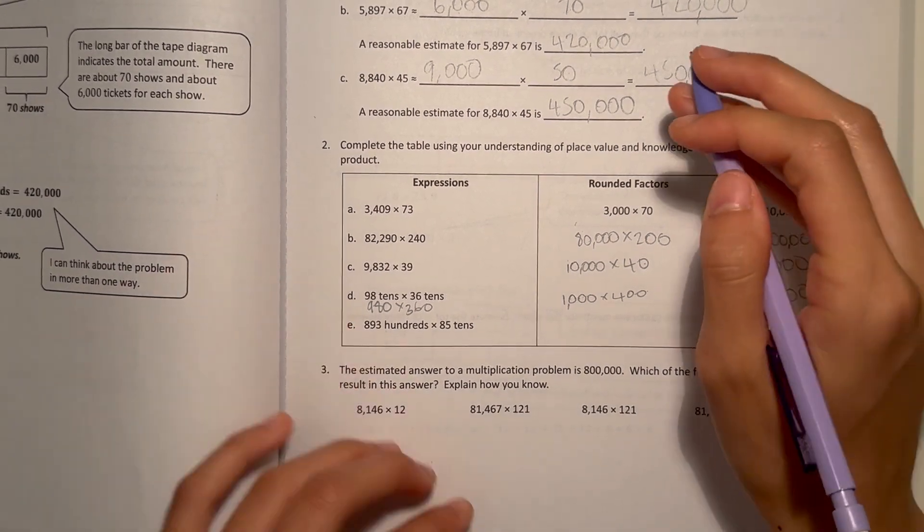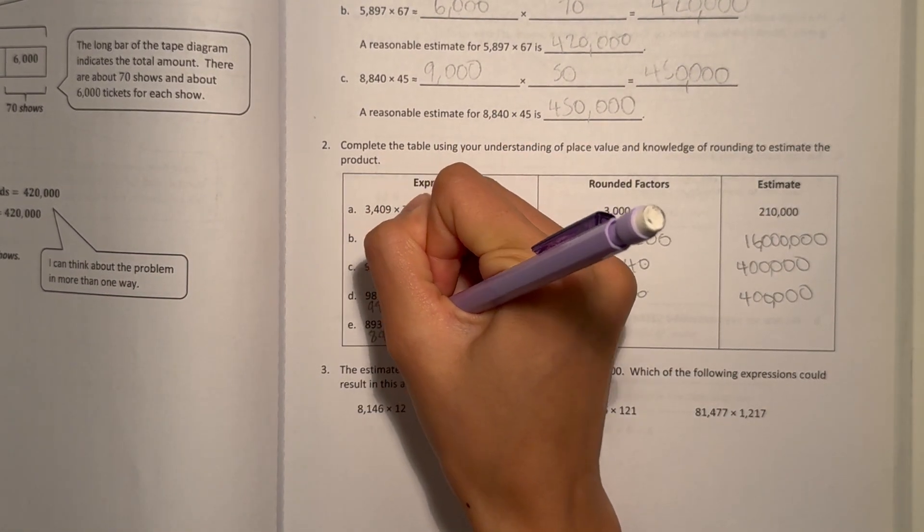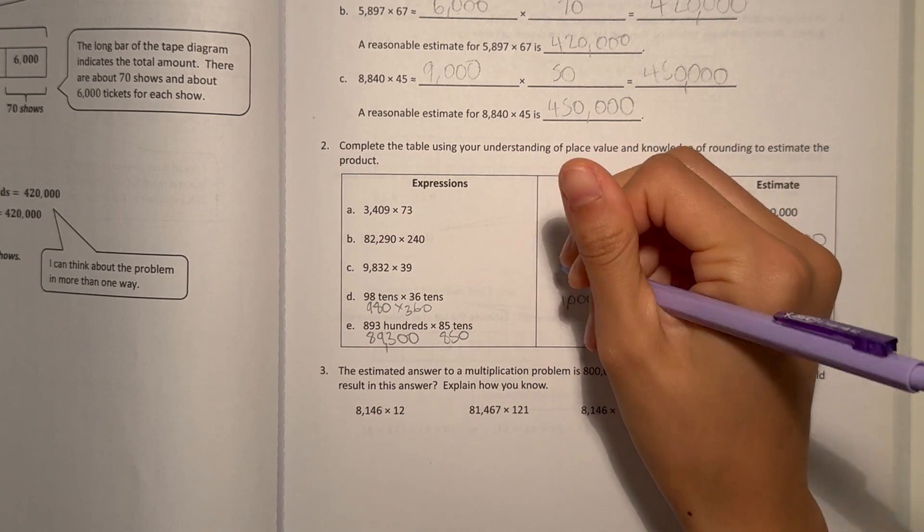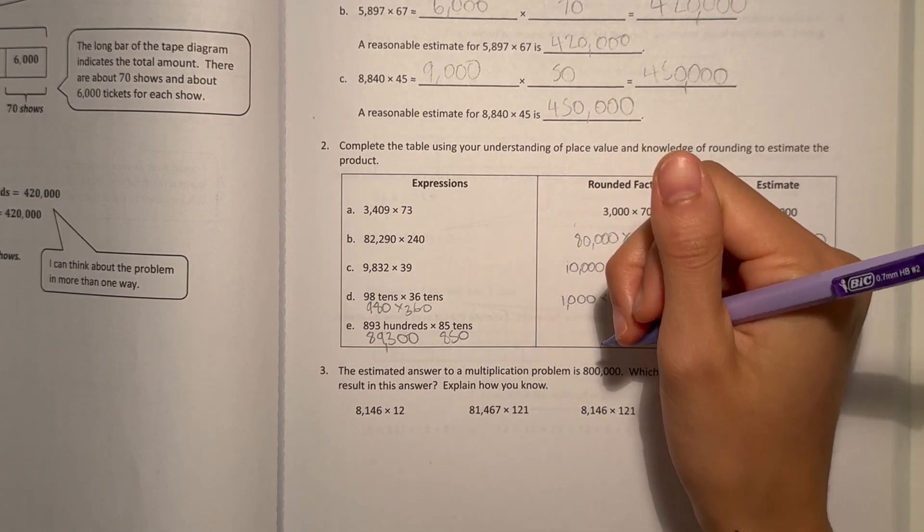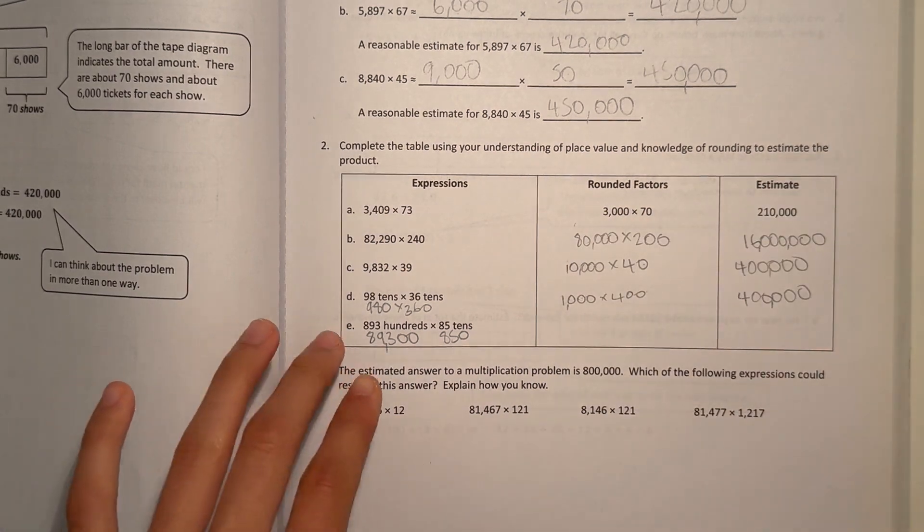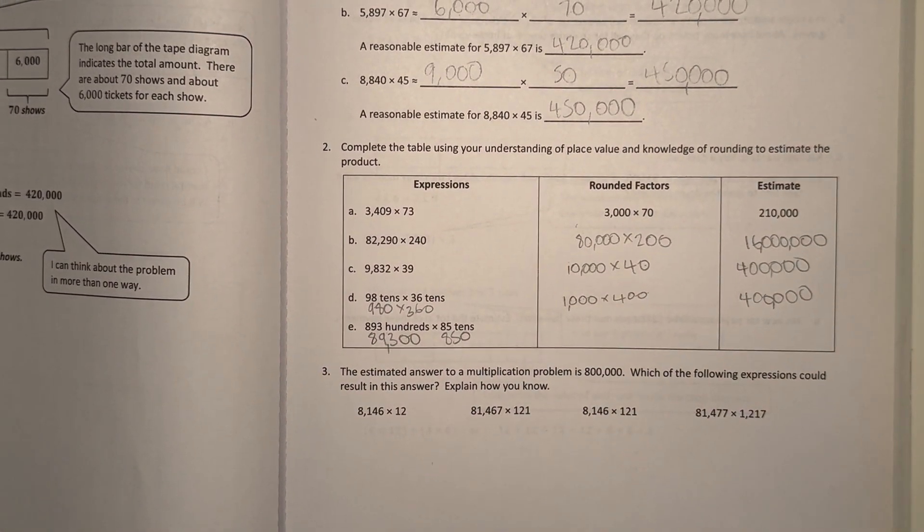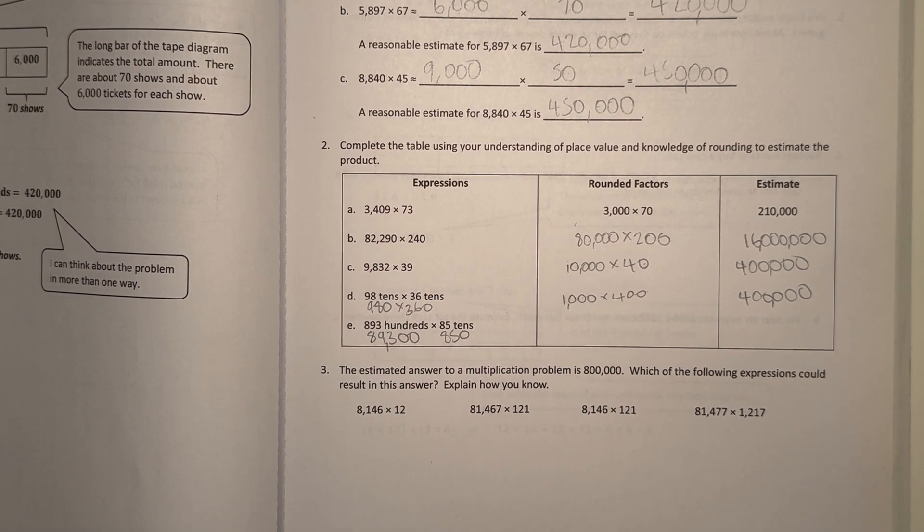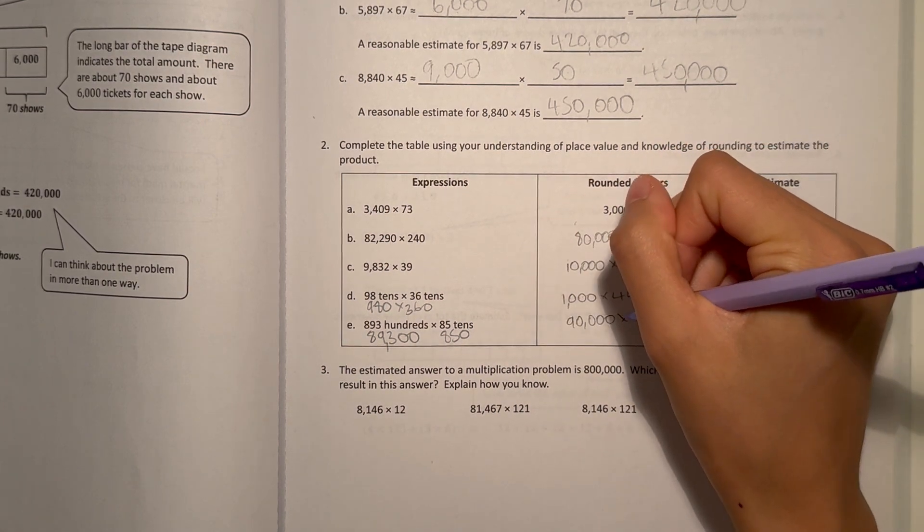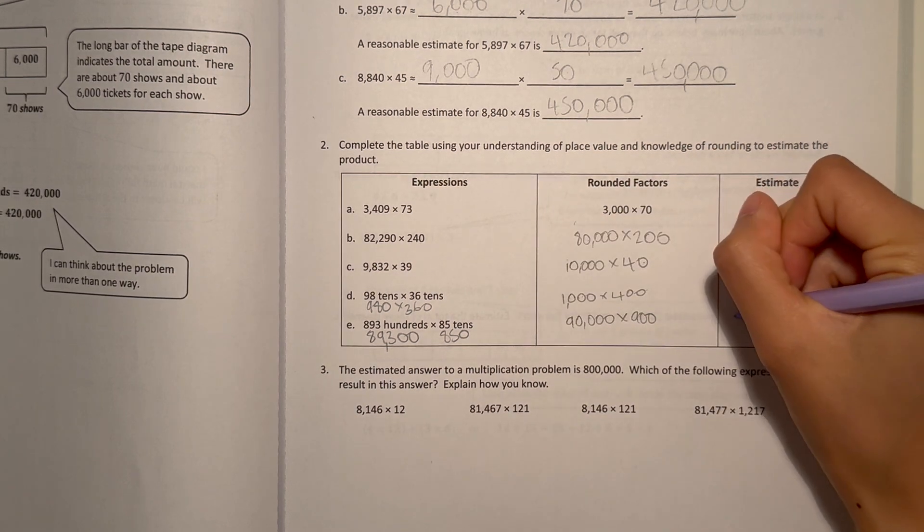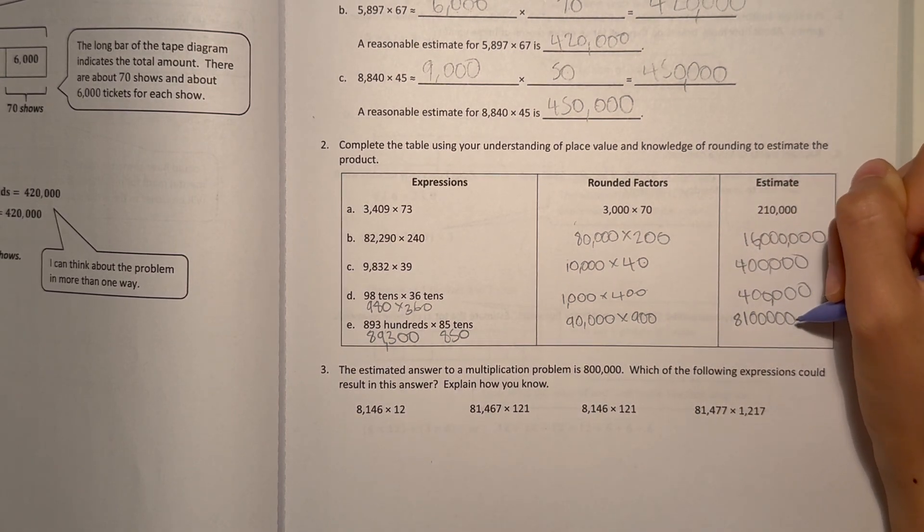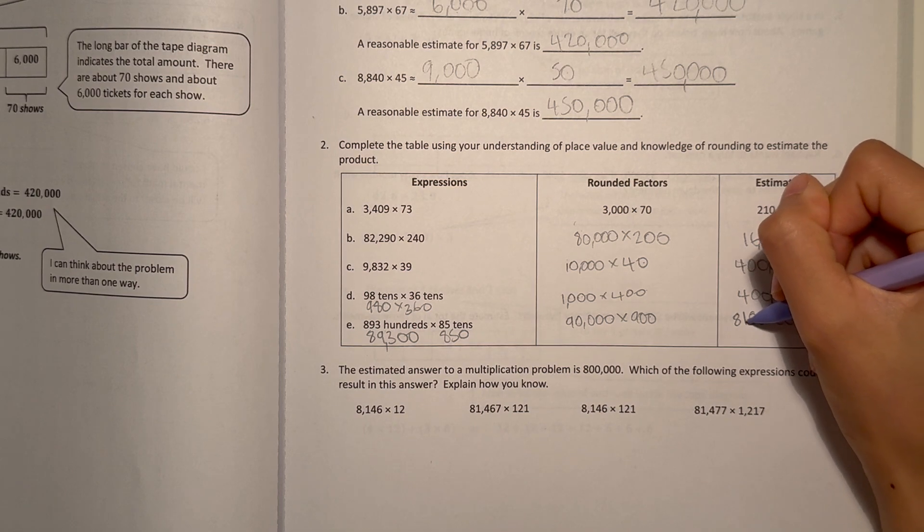And E, 890 hundreds. That's 89,300 and 85 tens, that's 850. So 89,300 to the nearest 10,000 would be 90,000 times 850 to the nearest hundreds would round up to 900. 9 × 9 is 81, and there's 1, 2, 3, 4, 5, 6 zeros. So our answer is 81,000,000.